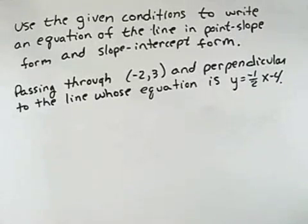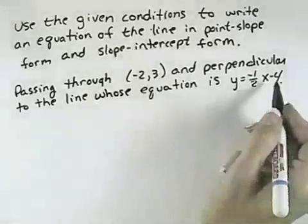Use the given conditions to write an equation of the line in point-slope form and slope-intercept form, passing through the point (-2, 3) and perpendicular to the line whose equation is y = -1/2x - 4.